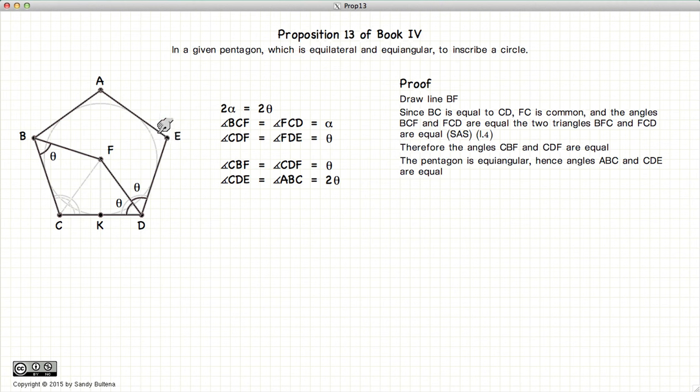Now the pentagon is equal angular, which means that the angle at B, the whole angle at B, is equal to the whole angle at D. Well, the whole angle at B will now be two theta, because that's what this one is. So if this is two theta, and we subtract theta off of it, we're left with that the angle ABF is also equal to theta.